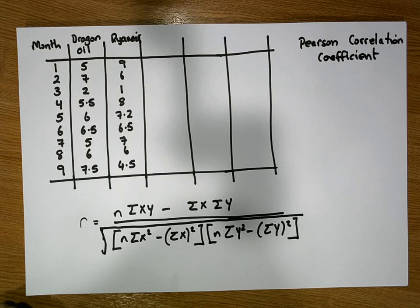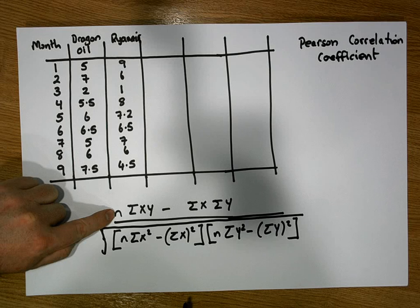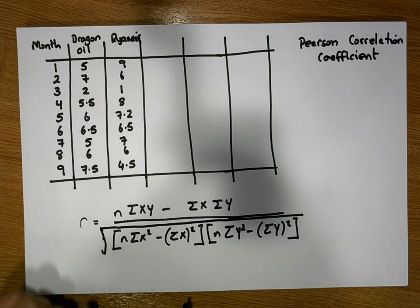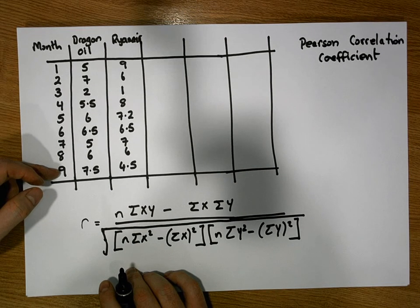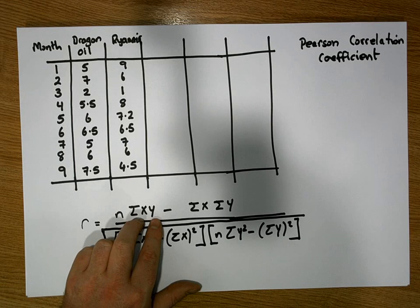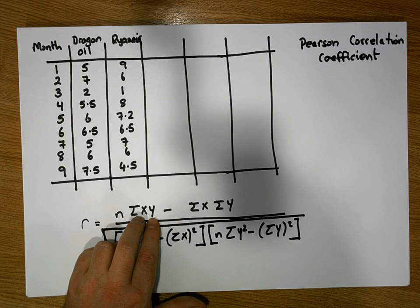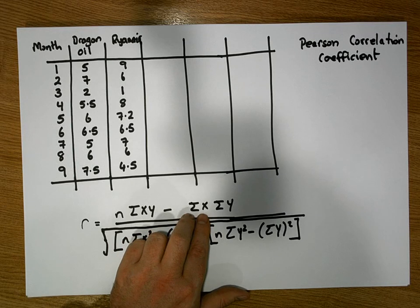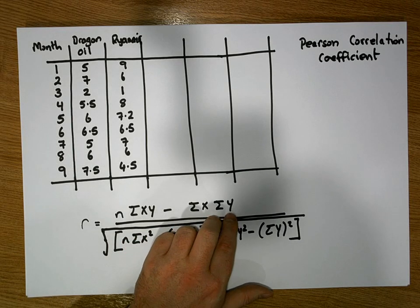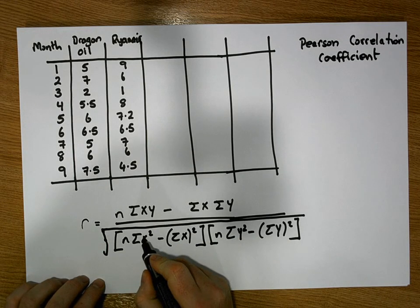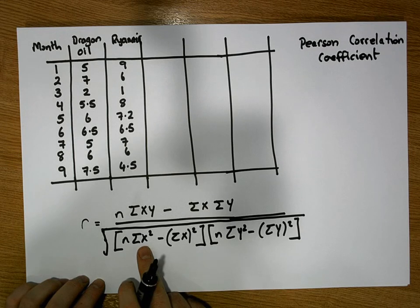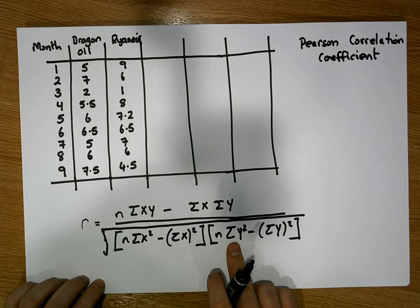The formula looks very complicated but it's made up of a number of parts — it's simply a fraction with a numerator and a denominator. The numerator is made up of two terms. We have n, which represents the number of paired observations — in our case we have nine. Sigma xy represents the product of the independent and dependent variables, minus sigma x (sum of the independent variable) times sigma y (sum of the dependent variable). The formula also requires the square of each independent variable value summed up, and the square of each dependent variable value summed.